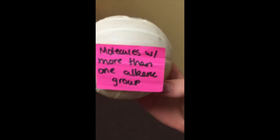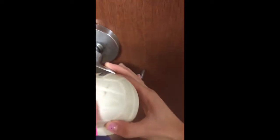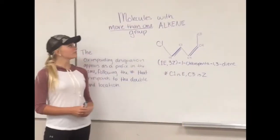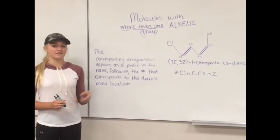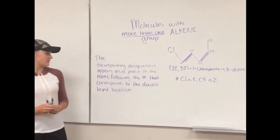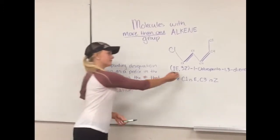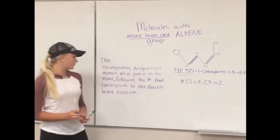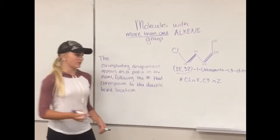Molecules with more than one alkene group. For each double bond, an E/Z configuration can be assigned. The corresponding designation appears as a prefix in the name and the number that corresponds to the double bond location will also be included.